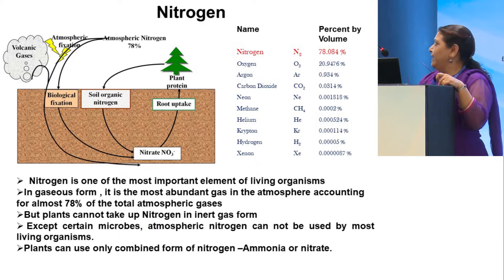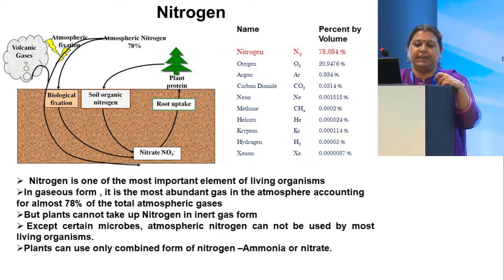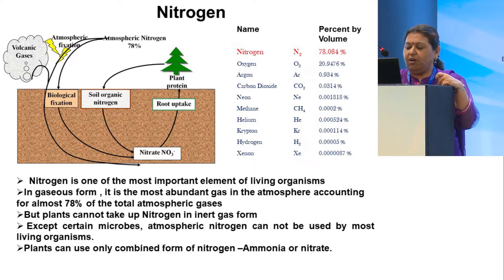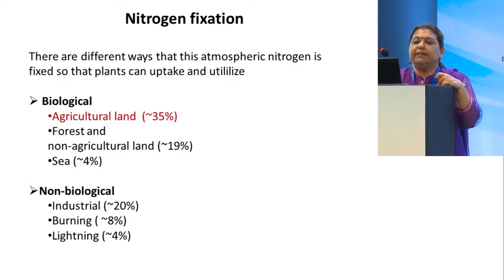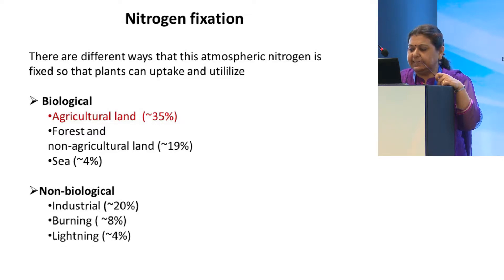We all know that nitrogen is an important element, but unfortunately most nitrogen cannot be utilized by plants because they cannot take the inert gas form. Therefore, plants can only use the combined form of nitrogen — ammonia or nitrate. Nitrogen fixation in nature takes place by two methods: biological and non-biological. Biological nitrogen fixation, especially in agricultural land, is quite dominant.